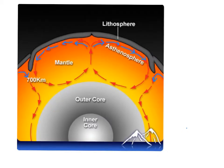In earth's mantle, large amounts of heat are transferred by convection currents, represented here with the arrows. Heat from the core and the mantle itself causes convection currents in the mantle, and these convection currents cause our plates to move. When this liquid heats up, it rises, and the direction that the convection current goes determines which direction the plate is going to go.